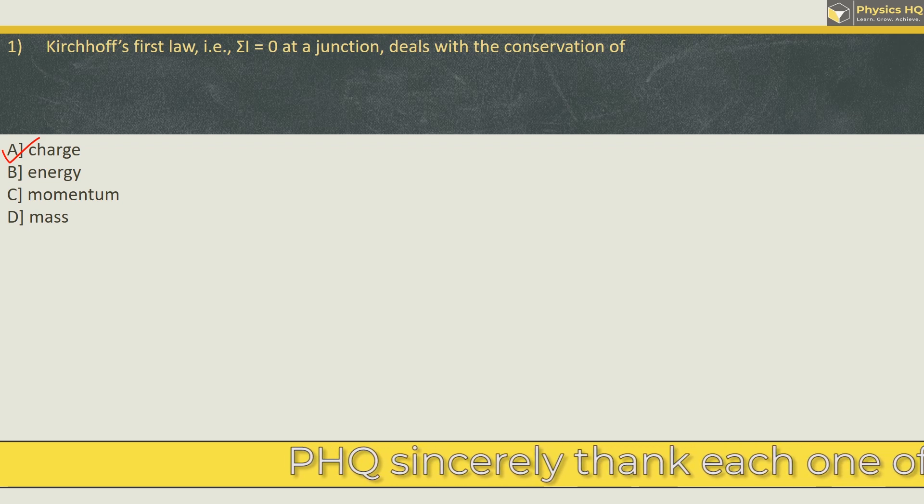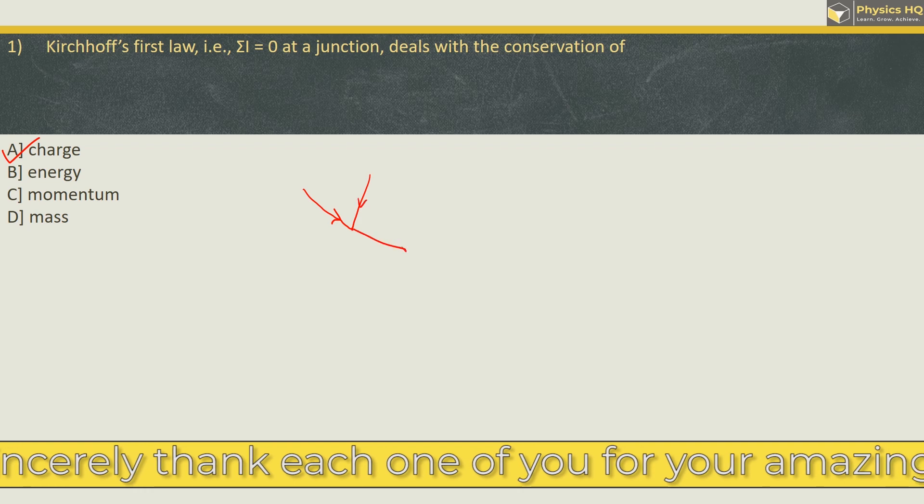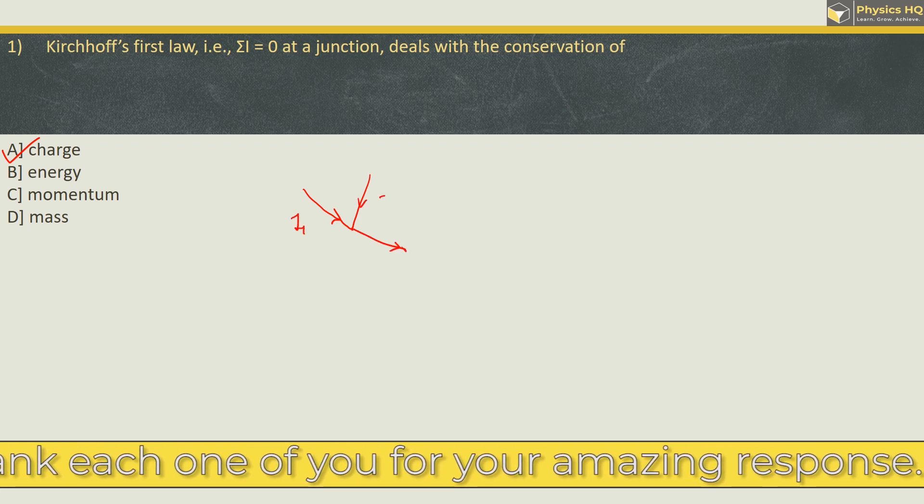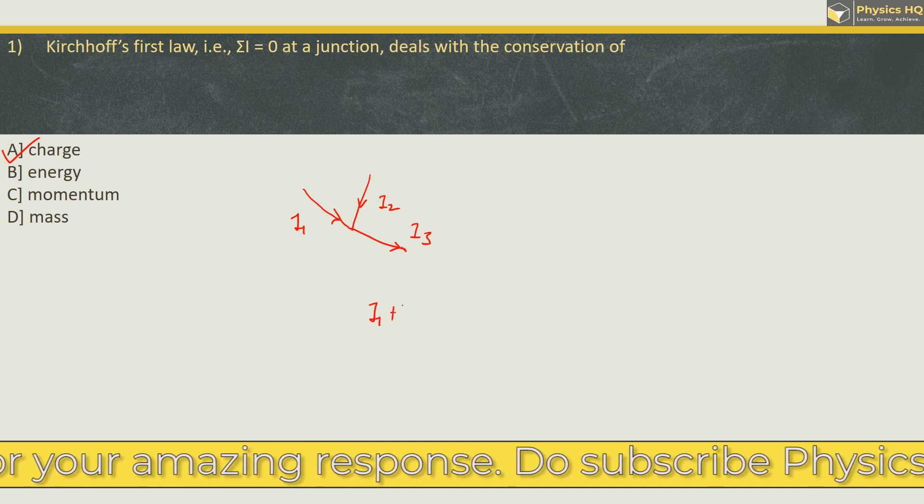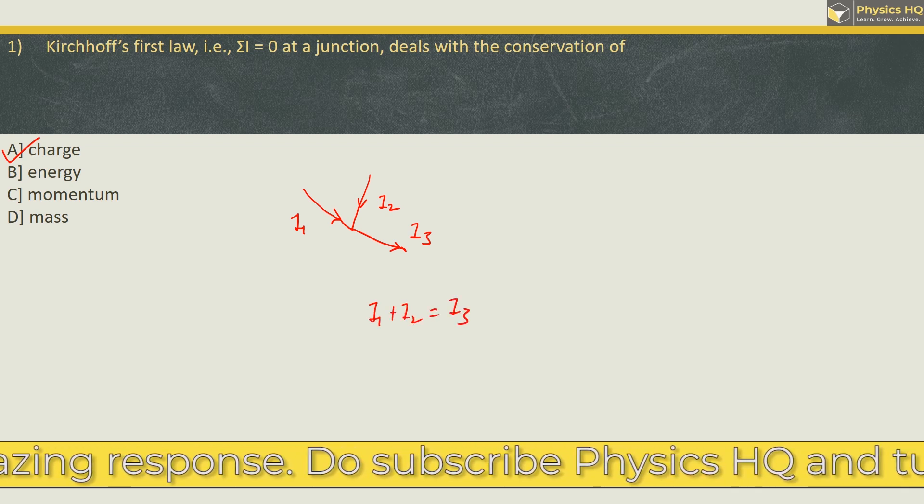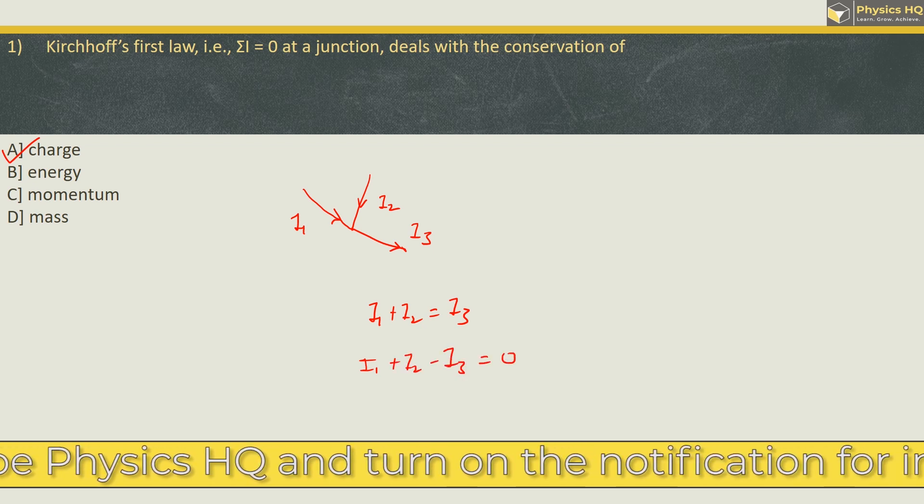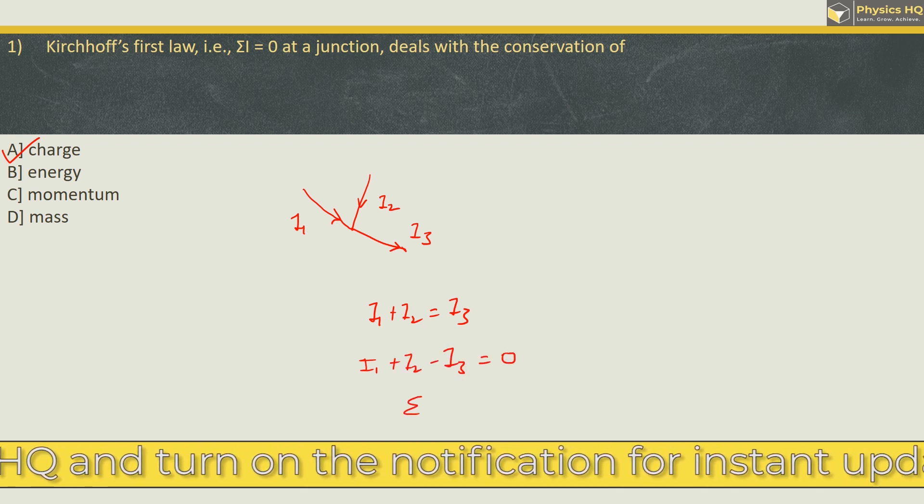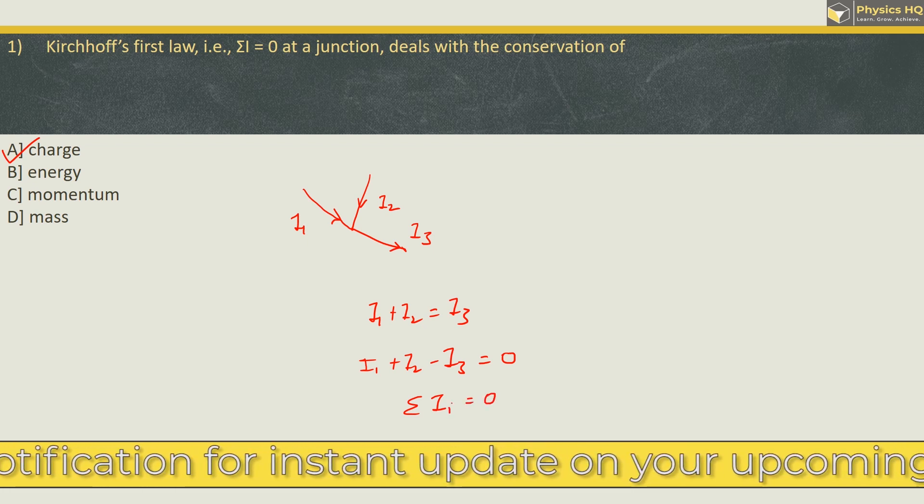What Kirchhoff's first law says is that if you have a junction over here, then incoming current will be equal to outgoing current. So if you have i1 and i2 as incoming and i3 as outgoing, so I can write i1 plus i2 equals i3. Or you can take this i3 on the other side which will make this equal to 0, which is nothing but summation of all i over here is equal to 0.